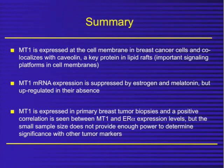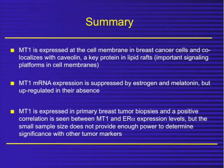So melatonin is expressed at the cell membrane in breast cancer cells and co-localizes with caveolin, a key protein in lipid rafts — important signaling platforms in cell membranes. The messenger RNA levels for the MT1 receptor are suppressed by estrogen and melatonin in human breast cancer cells. But if you remove estrogen and melatonin by charcoal stripping, you upregulate the MT1 receptors. So melatonin in this system can downregulate the expression of its own receptor.